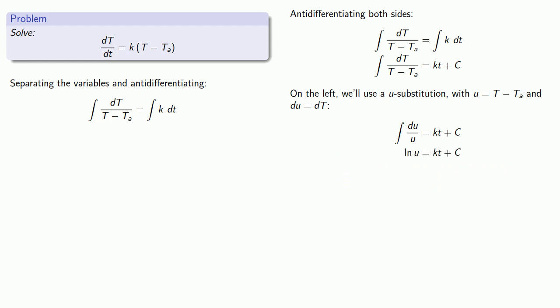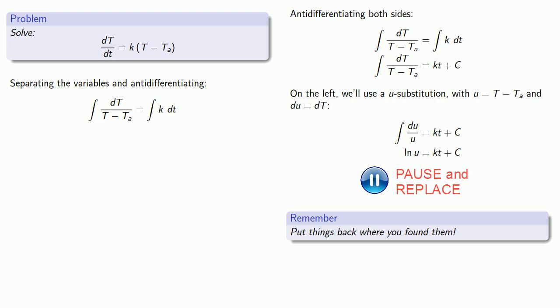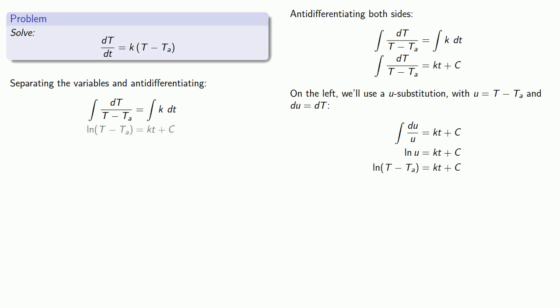Since we've already included the constant of anti-differentiation over on the right, we don't need to introduce a new one over on the left. And, very important, put things back where you found them. u is T minus T sub a, so we'll replace and get our anti-derivatives.